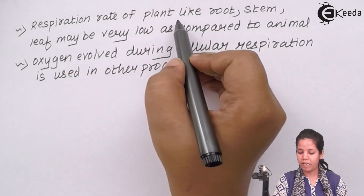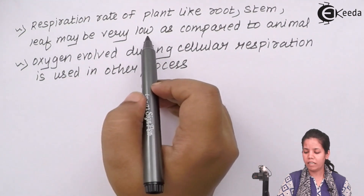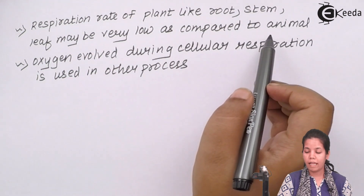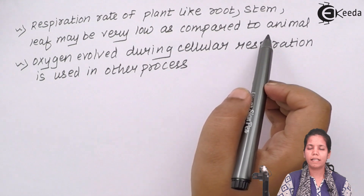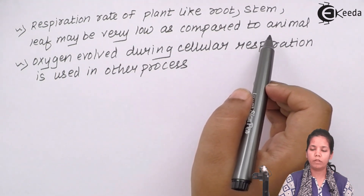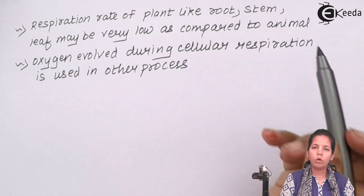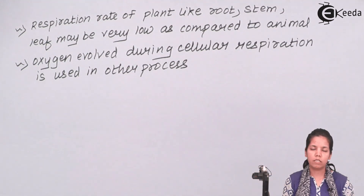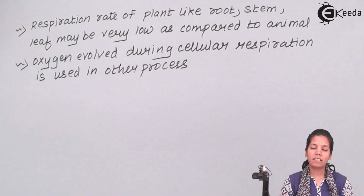Respiration rates of plant parts like roots, stems, and leaves may be very low as compared to animals. Animals do a lot of anabolic and catabolic processes throughout the day, so their respiration has to be faster and quicker. During the process of photosynthesis, whatever molecules are formed — whether it is oxygen or any other molecule — are used in the cellular respiration process.